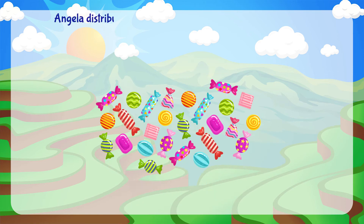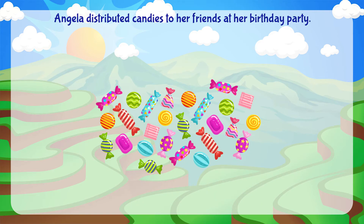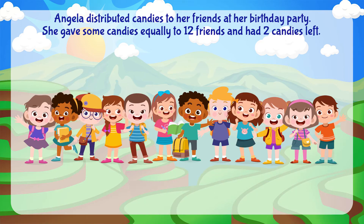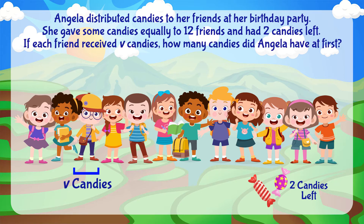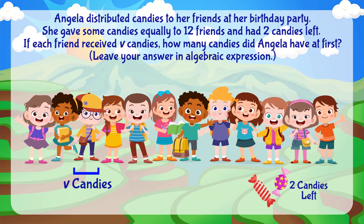Angela distributed candies to her friends at her birthday party. She gave some candies equally to 12 friends and had 2 candies left. If each friend received V candies, how many candies did Angela have at first? Leave your answer in algebraic expression.